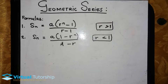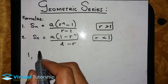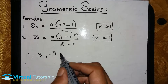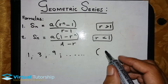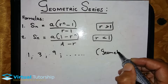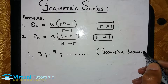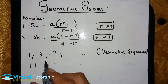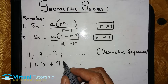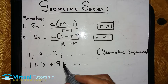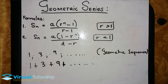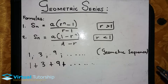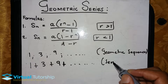Okay, today we are looking at geometric series. A geometric series - is it the same as a geometric sequence? For example, 1, 3, 9, all the way up to infinity - this is an example of a geometric sequence. A geometric series is just the sequence, but it's the total of the terms, adding them all the way up to infinity. That is an example of a series.